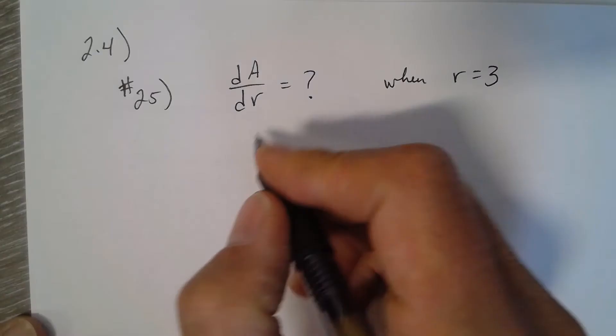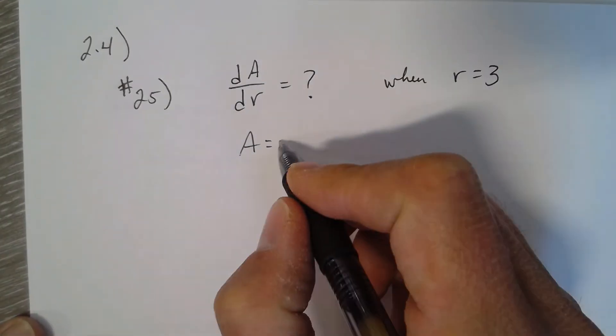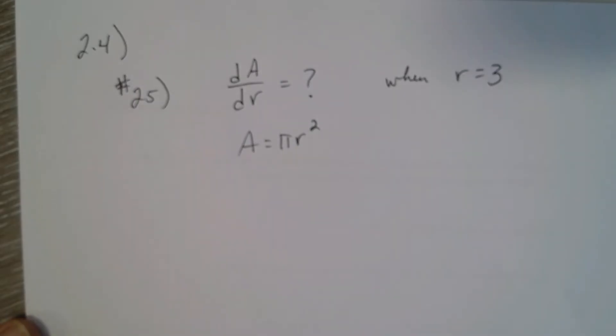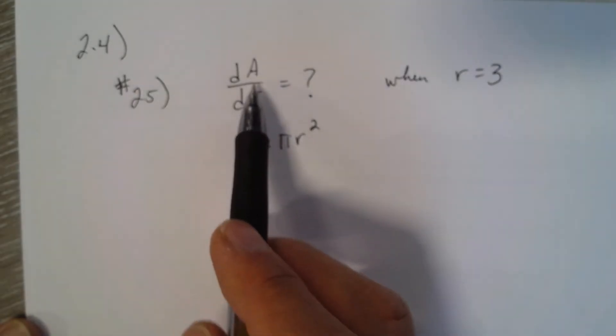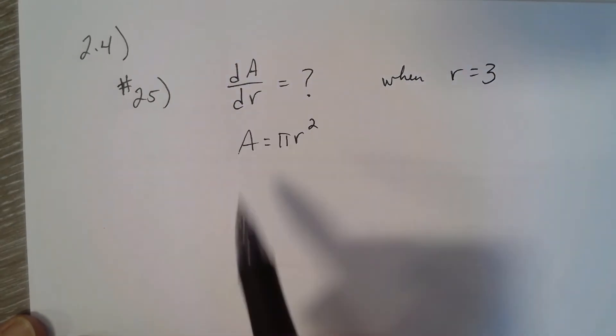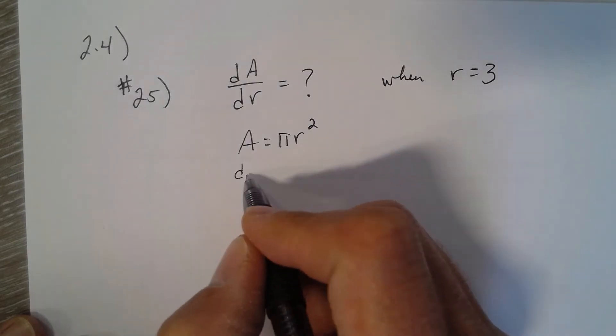Start with an equation. Area of a circle is πr². So now we want to know what is dA/dr, the rate of change of the area with respect to the radius.